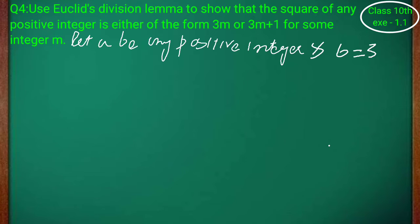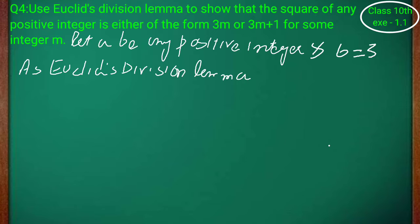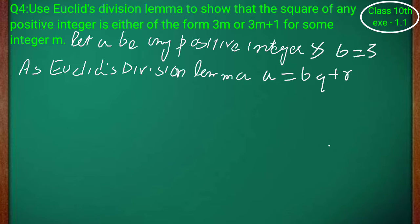تو ہم let کر لیتے ہیں: ہمارا a کوئی positive integer ہے اور b equal to 3۔ Let a be any positive integer and b equal to 3. Division Lemma کہتا ہے کہ a equal to b×q plus r، تو b equal to 3 put کریں گے تو a equal to 3q plus r بن جائے گا۔